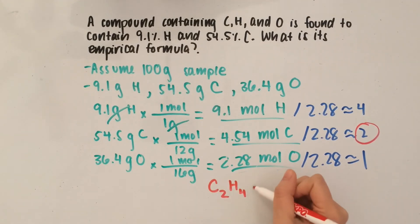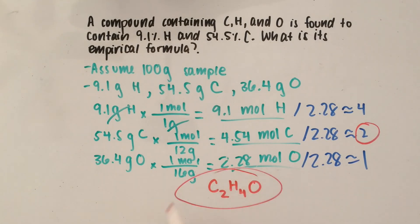and then O is just 1. So, that's just going to be O. That means that this is your answer. The empirical formula is C2H4O.